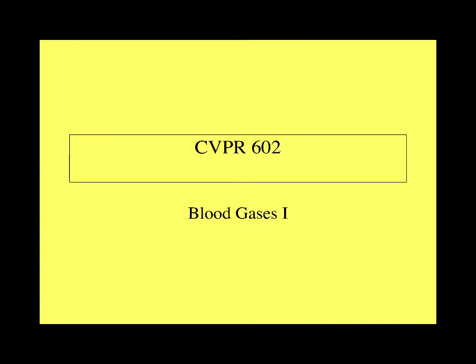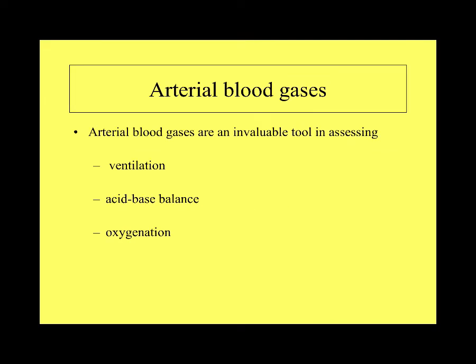We're going to talk about blood gases — a term we use to describe measuring the values of oxygen, CO2, and pH in the blood. These blood gases are very valuable in critical care medicine, and as a perfusionist you will draw them continuously throughout a bypass case, both arterial and venous blood gases from the manifold. This is an important aspect of understanding how well the perfusion we are providing is doing — part of our adequacy of perfusion tools.